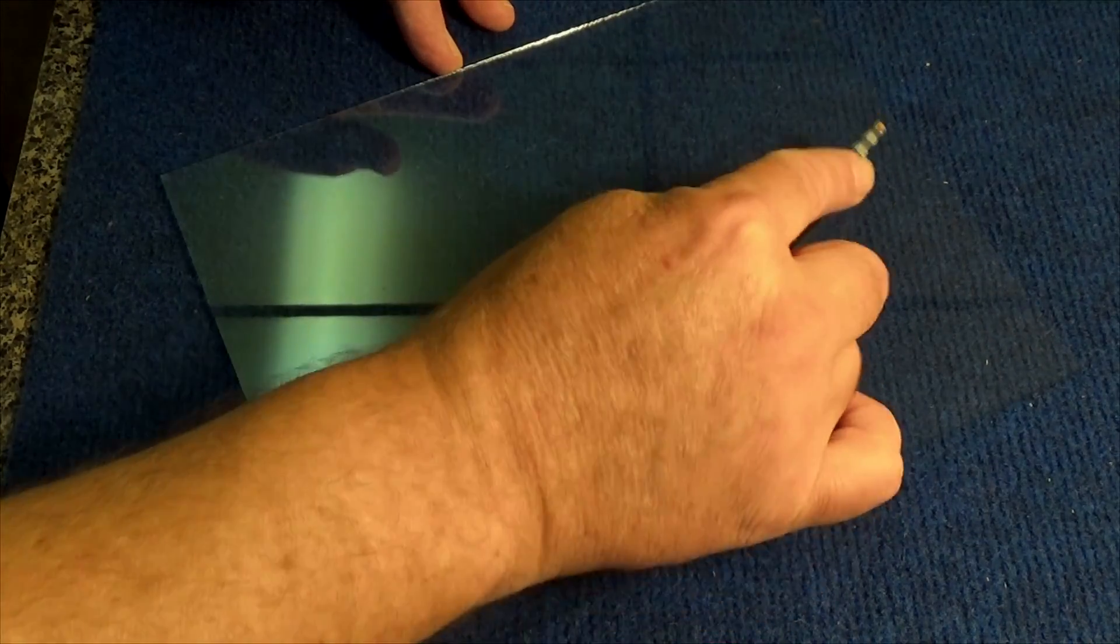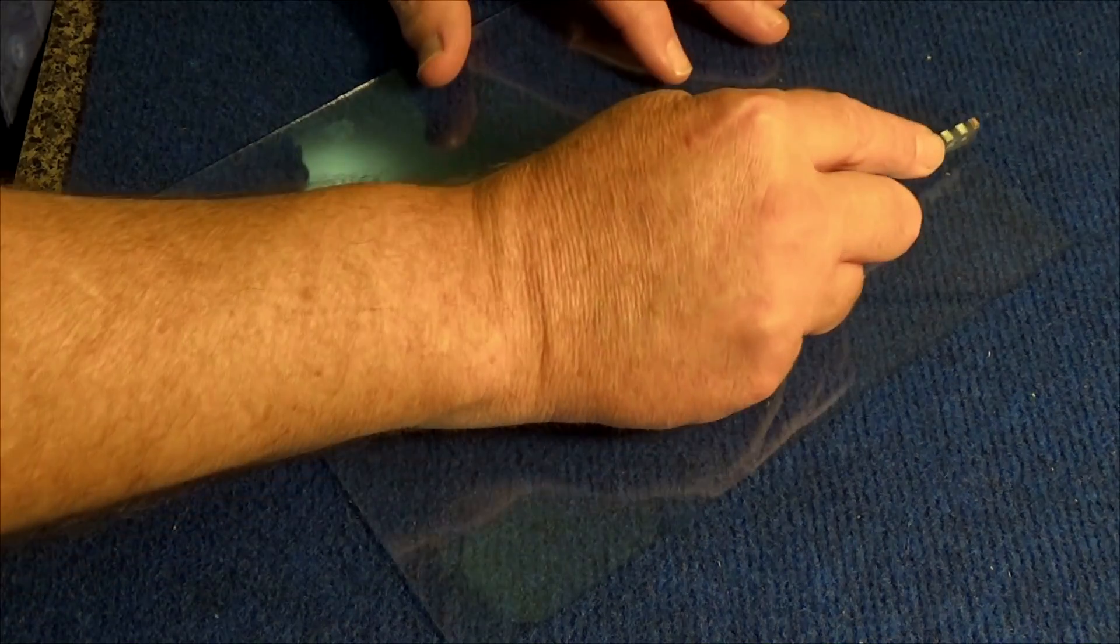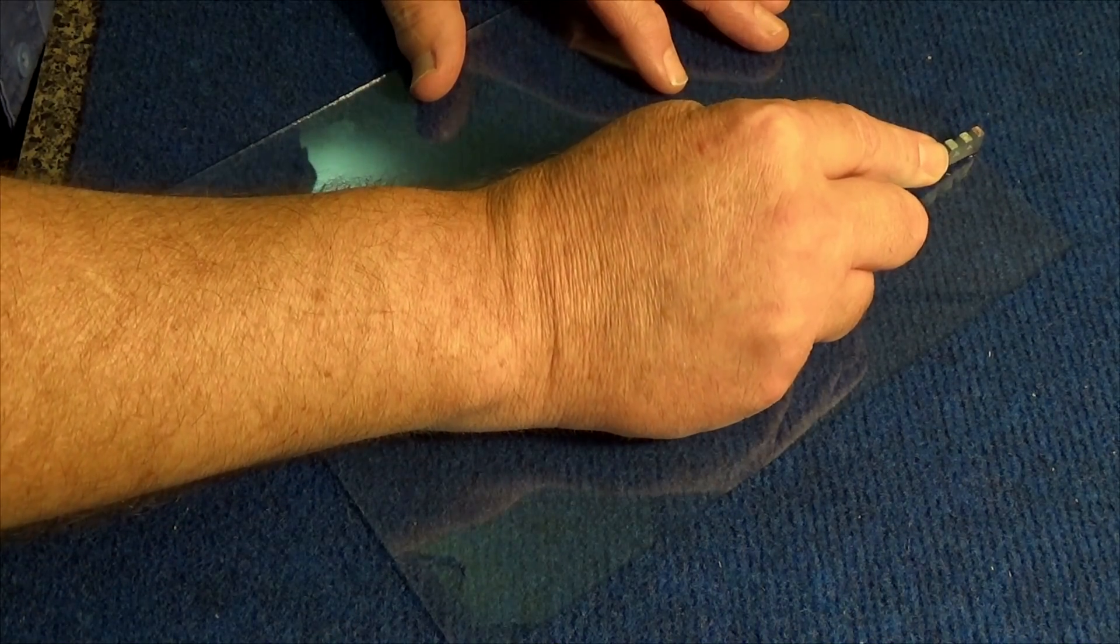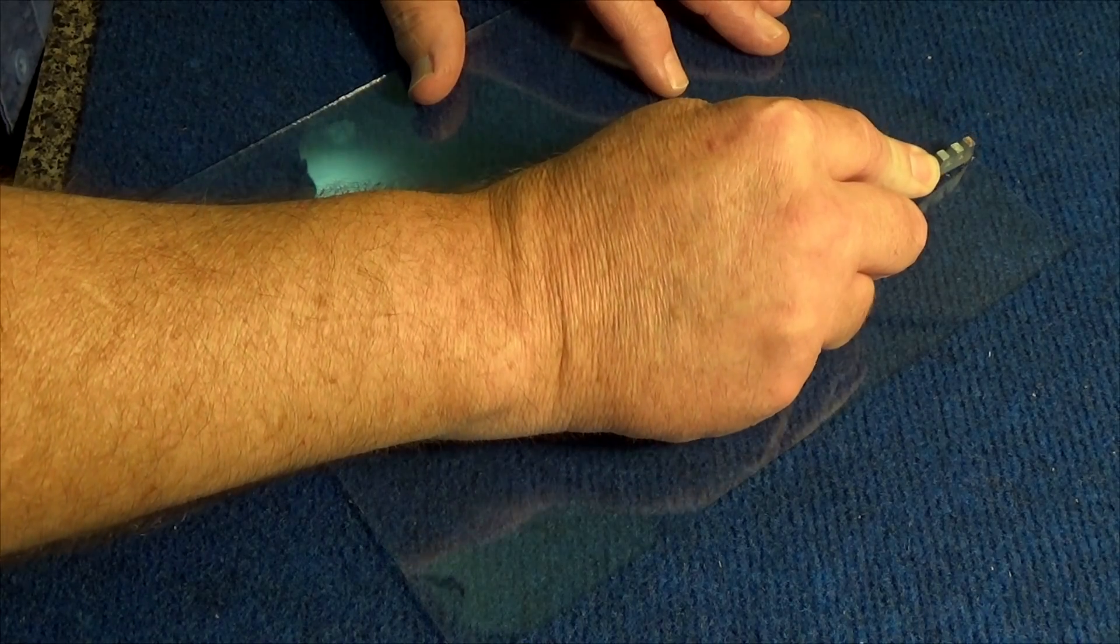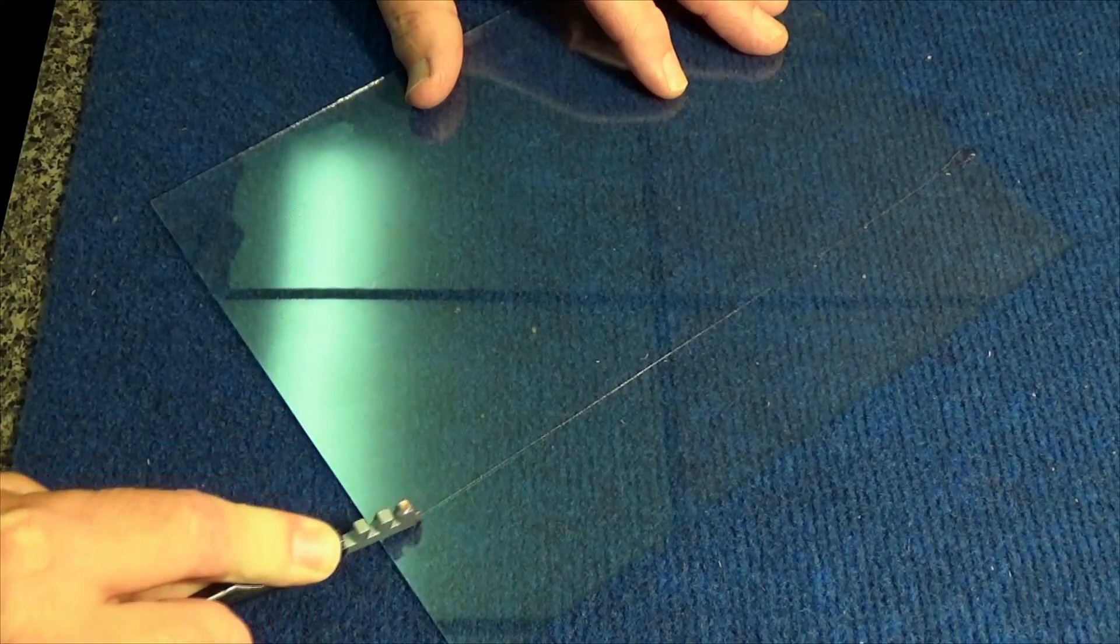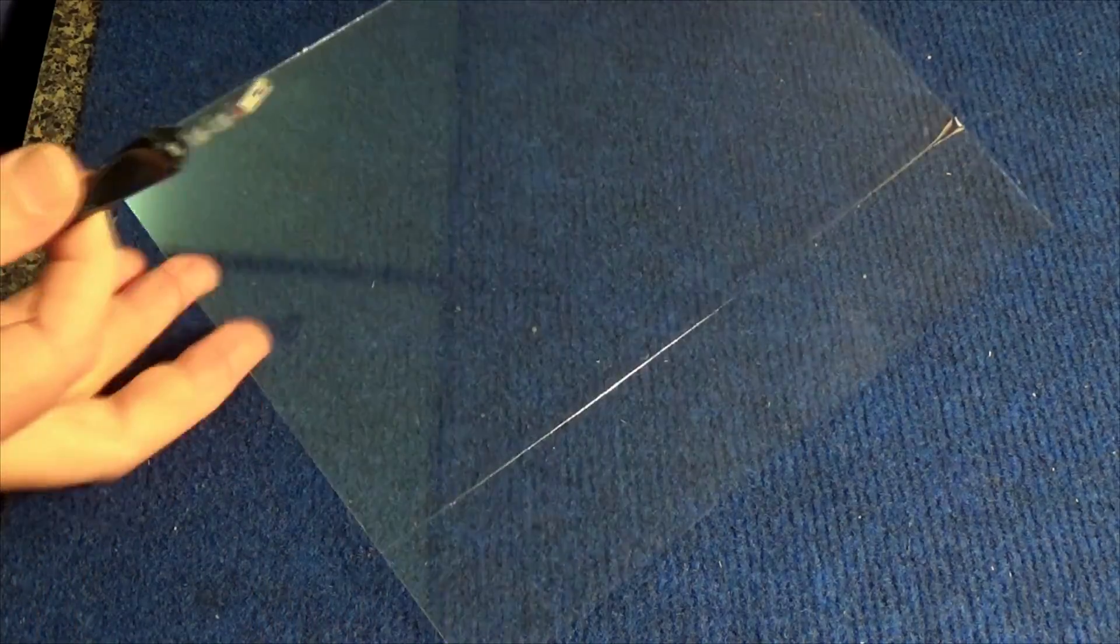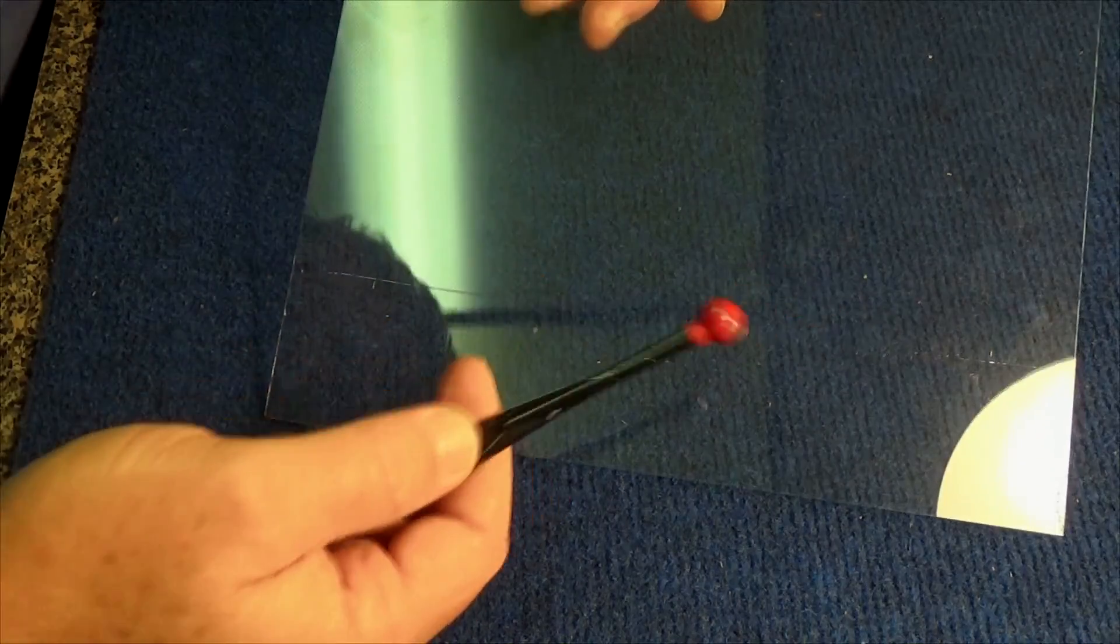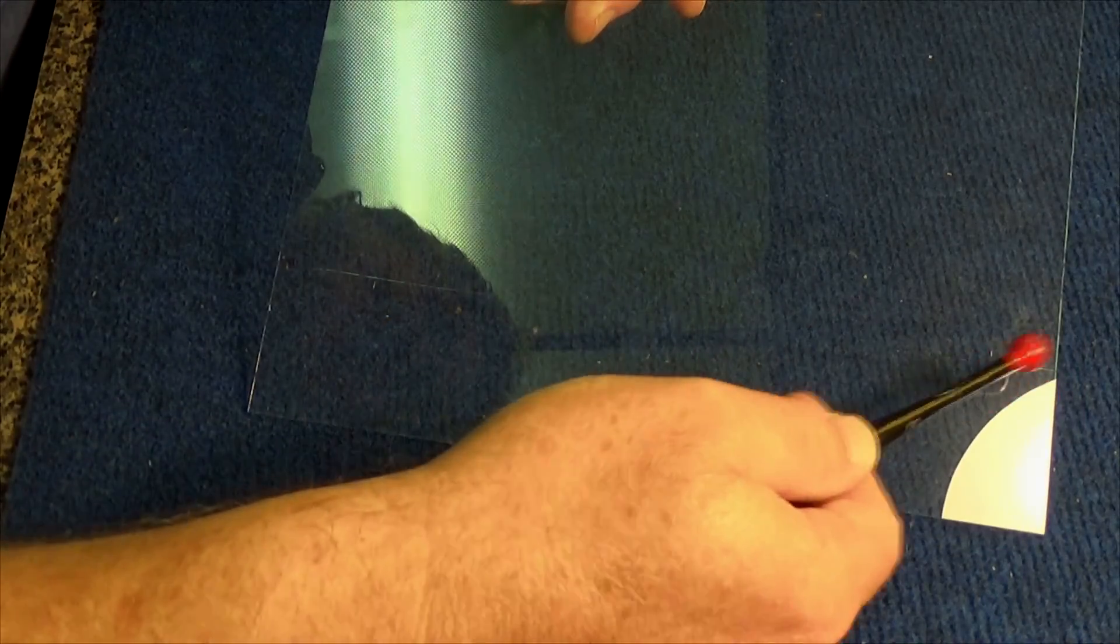Once you do your cut, do not go back over it. You start from the very edge, apply the pressure. Hear that sound? All the way to the end, just like that. Flip it over, use your little hammer, and just tap the line.